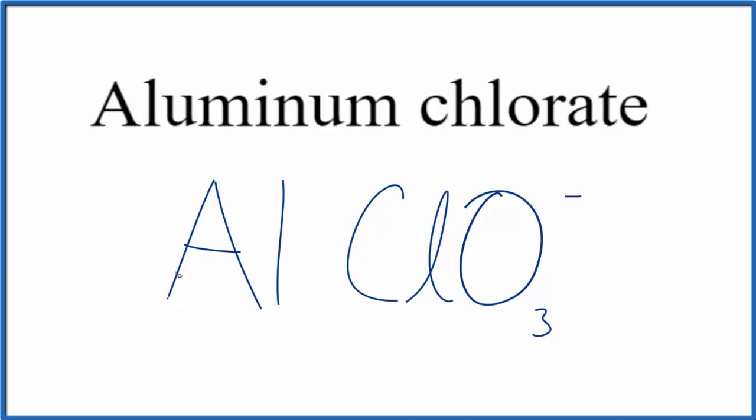Aluminum is in group 13, sometimes called 3A. It has a 3+ ionic charge. We know the whole chlorate ion is 1-, so we're going to need three of these chlorate ions for the charge to balance and give us a net charge of zero.